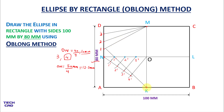Again from K towards 2′, extended to meet the M-2 line; then from K towards 3′, extended to meet the M-3 line. I will name these intersection points as P1, P2, and P3. These are the points on the profile of my ellipse.